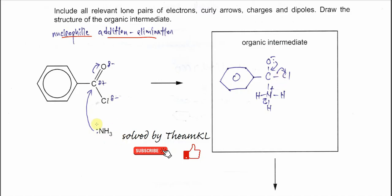Starting the mechanism: draw the lone pair on nitrogen of ammonia. Put the dipole on the carbonyl — partial positive on the carbonyl carbon and partial negative on the oxygen — and also partial negative on the chlorine. Draw one arrow from the lone pair pointing to the partial positive carbonyl carbon to show new bond formation. Then draw another arrow from the C=O pi bond to the oxygen to show the pi electrons move to oxygen.